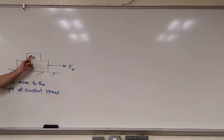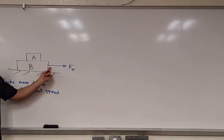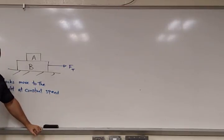What do we have here? We've got blocks A and B. They're not connected. Block A is just sitting on top of block B, and there's some kind of string attached to block B, and that's being pulled horizontally with the tension force.